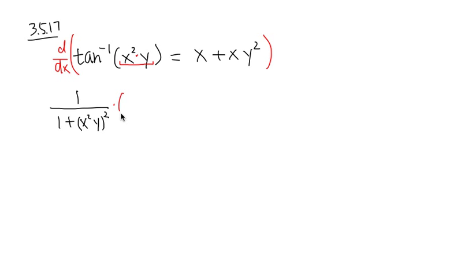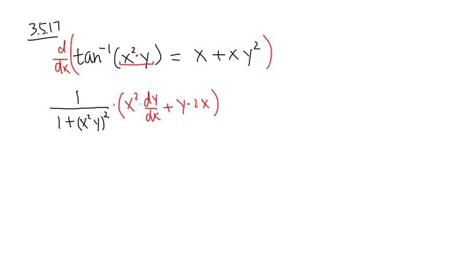Applying the product rule to the inside: keep the first function x squared times the derivative of y, which is dy/dx, and add the second function y times the derivative of the first, which is 2x. That completes the left-hand side. On the right-hand side, the derivative of x with respect to x is 1, plus the derivative of x times y squared, which also requires the product rule.